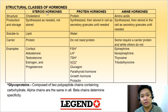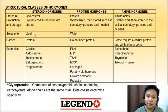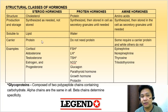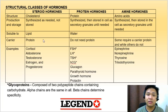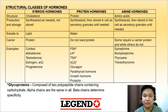Your steroid hormones are based from cholesterol. They are synthesized as needed and not stored. They are lipid-soluble but water-insoluble. Therefore, they require carriers such as proteins for them to be transported in blood. Examples include cortisol, aldosterone, testosterone, estrogen, and progesterone.